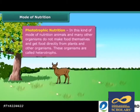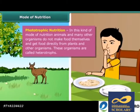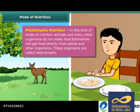The mode of nutrition in which animals and many other organisms take in ready-made food prepared by the plants is called heterotrophic nutrition, and these organisms are called heterotrophs. Human, lion, tiger, etc. are the examples of heterotrophs.